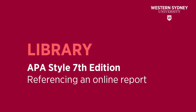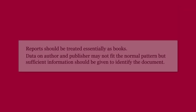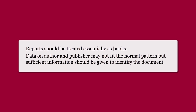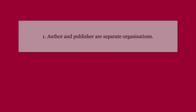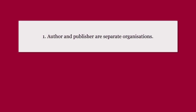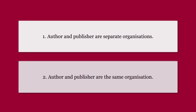This guide will show you how to reference an online report using the APA 7th referencing style. Reports should be treated essentially as books. Data on author and publisher may not fit the normal pattern, but sufficient information should be given to identify the document. We'll go through two examples in this video: the first is where the author and publisher are separate organisations, and the second is where the author and publisher are the same organisation.